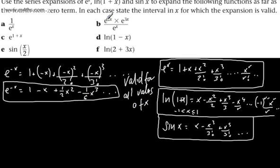Okay, let's look at the next one. We've got e to the 2x multiplied by e to the 3x divided by e to the x. Using rules of indices, we get e to the 5x divided by e to the x, which is e to the 4x.